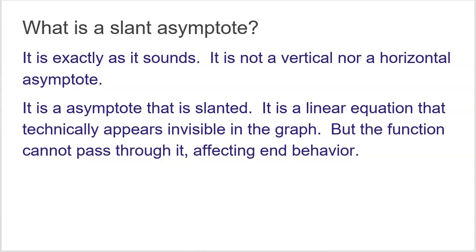In an earlier video we talked about end behavior with rational functions. In summary, you look at the degree of the numerator and the degree of the denominator. If the degrees are tied, you divide the two leading terms and the quotient is your horizontal asymptote. If the denominator's degree is bigger, you automatically have a horizontal asymptote at y equals 0, because the bottom grows much larger, producing a value very close to 0.